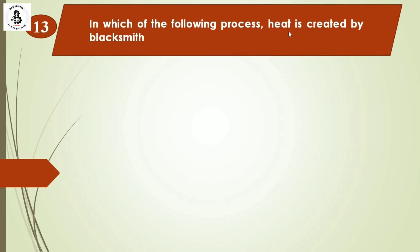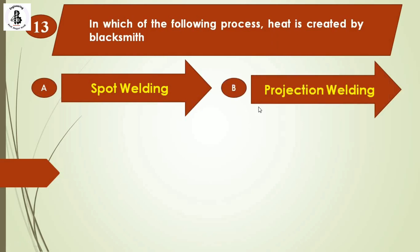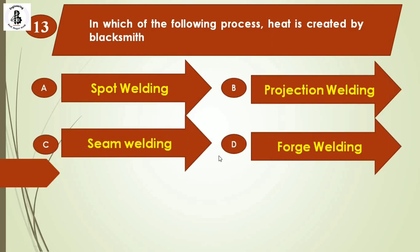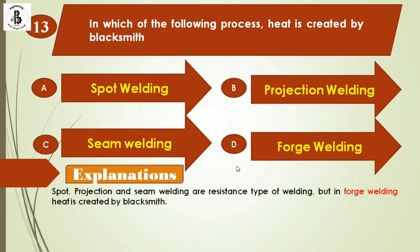Question 13: In which of the following processes is heat created by a blacksmith? Option A: spot welding, option B: projection welding, option C: seam welding, option D: forge welding. Spot welding, projection welding, and seam welding are categories of resistance-type welding, following the principle of resistance to electron flow. In forge welding, heat is created by the blacksmith. The right answer is option D: forge welding.